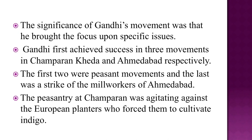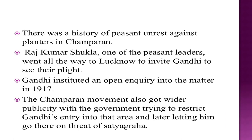The significance of Gandhi's movement was that he brought the focus upon specific issues. He first achieved success in three movements: in Champaran, Kheda, and Ahmedabad respectively. The first two were peasant movements and the last was a strike of the mill workers of Ahmedabad. The peasantry at Champaran was agitating against the European planters who forced them to cultivate indigo, and there was a history of peasant unrest against planters in Champaran.